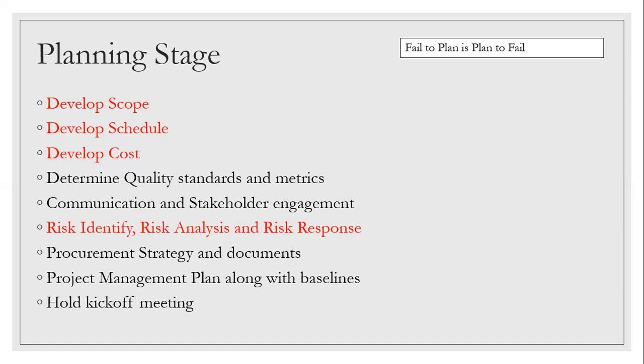In planning, you're developing scope, schedule, and cost. Certain statements are marked in red on the slide because these are the critical things — if they're not done, your project plan is definitely not completed. Quality standards also have to be defined: quality assurance happens in the planning stage, and quality control comes in the monitoring and control stage.